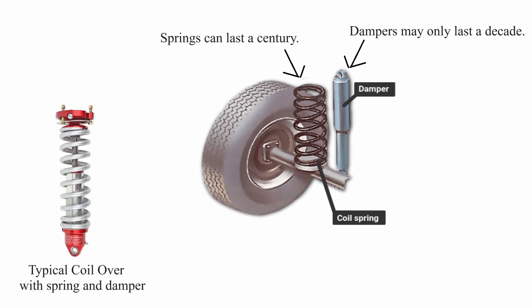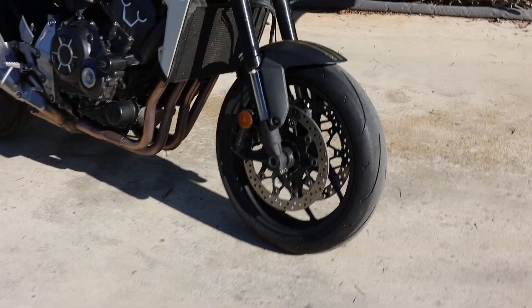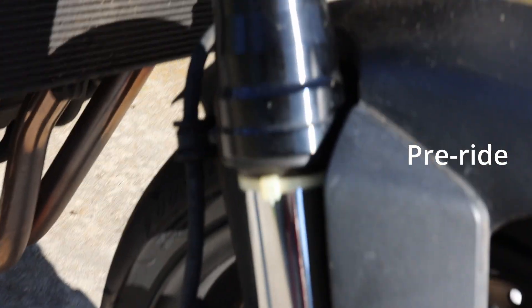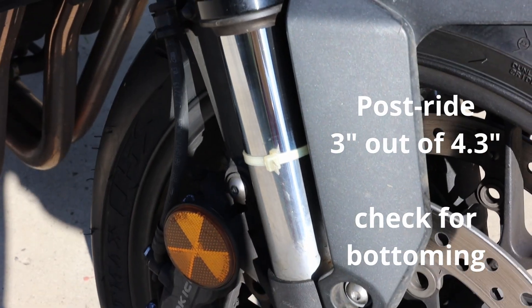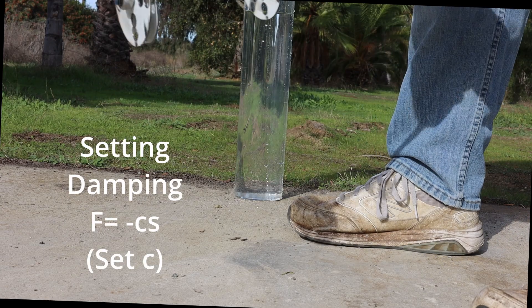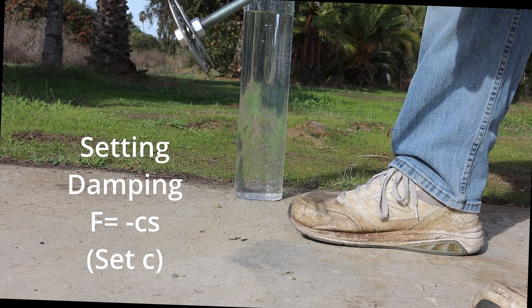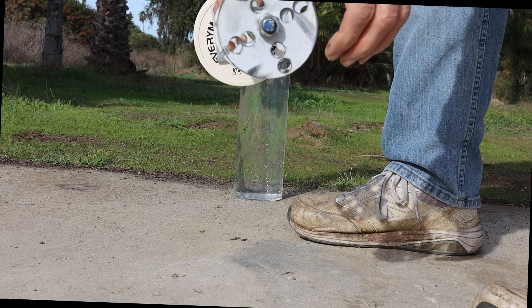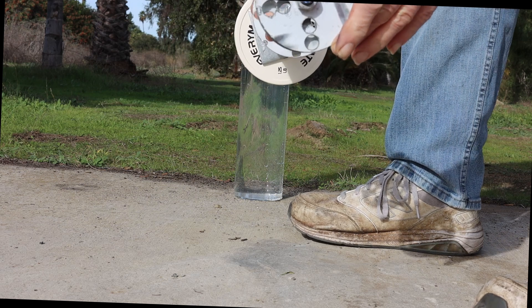If someone complains of bad shocks, I suspect damping first and springs second. I can set the damping by rotating the discs on my damper to allow more or less fluid flow. The discs are separated by a washer in the picture to make them easier to see. Setting the damping can be a major improvement to handling. It is as easy as opening and closing a bathroom sink valve.